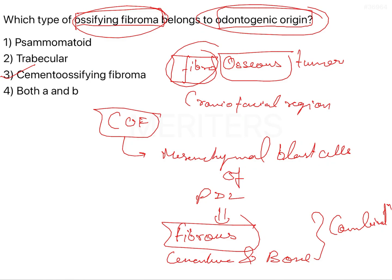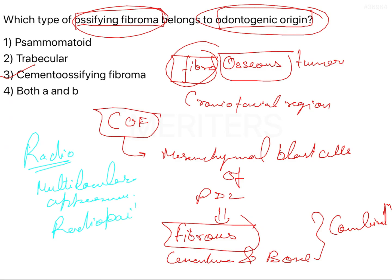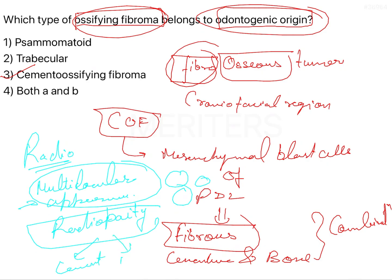If we discuss the radiographic features of this cemento-ossifying fibroma, you will be seeing a multilocular appearance and you can also see some radio-opacities. There can be some radiolucencies, which give it the multilocular appearance due to the fibres that are formed. Radio-opacity can be due to the cementum or the bone-like tissue that is formed.